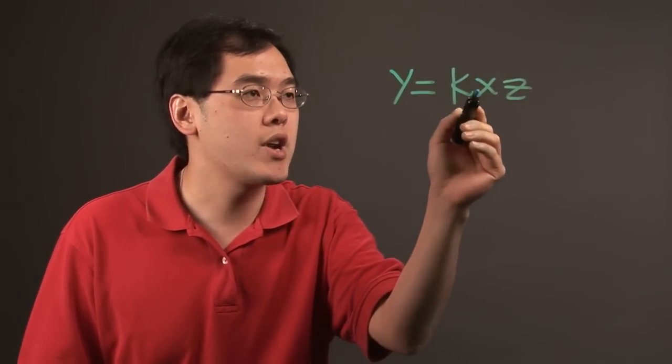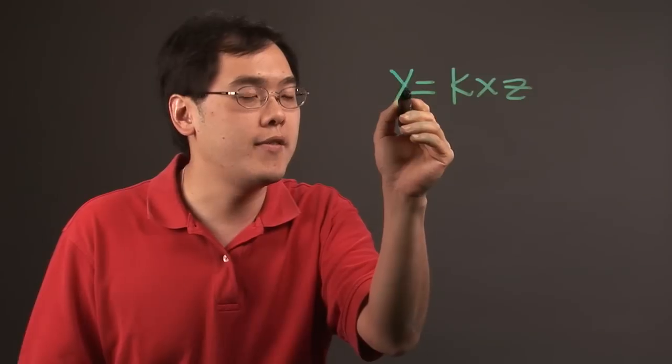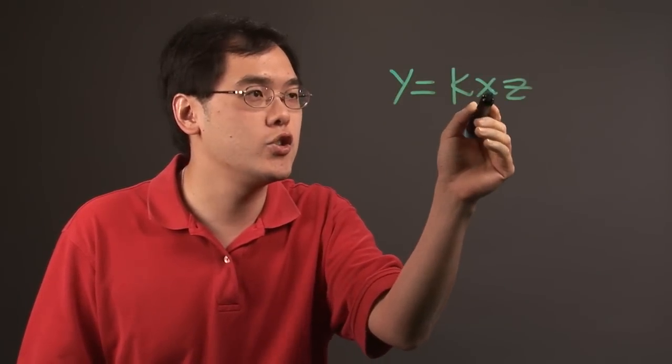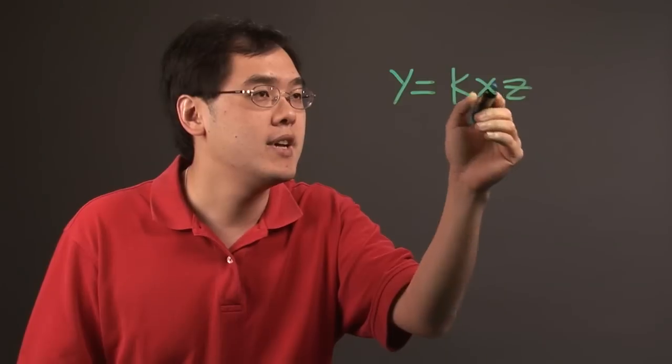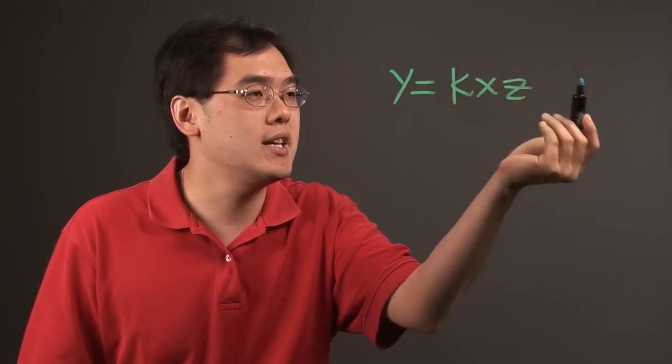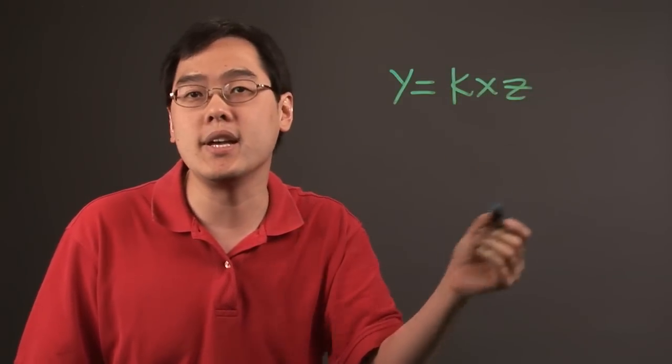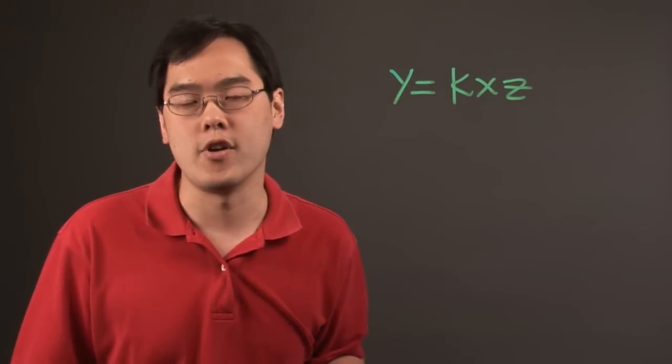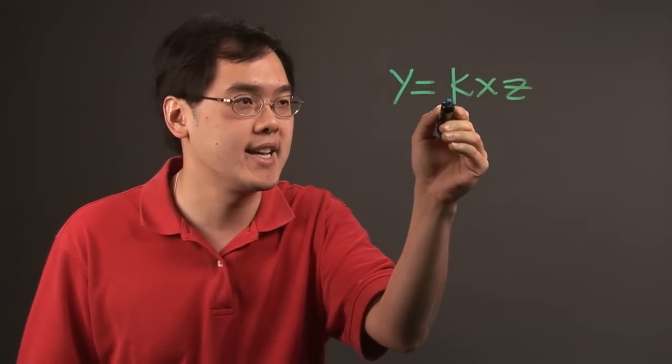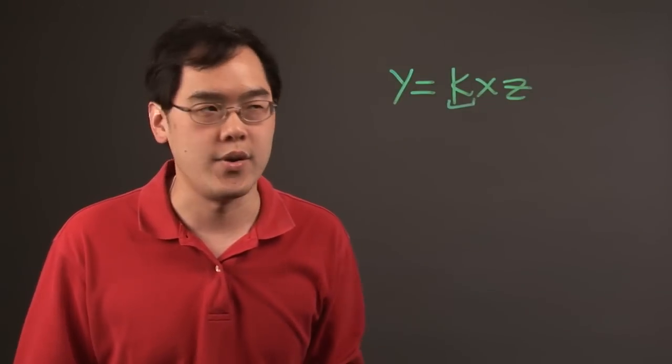In a joint variation proportion, you have at least one variable, like y, related to two or more variables. So it could be k×z, but you might have k×x×z, or even a, b, etc. The minimum is that y is related to at least two variables on the other side, and k is the constant of variation.